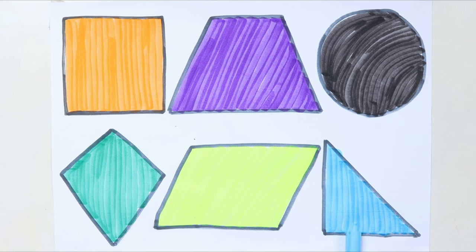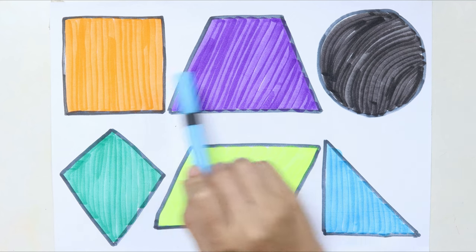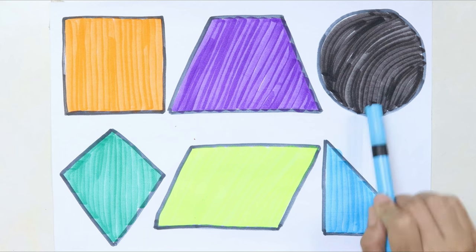Right triangle. Square. Trapeze. Circle. Kite. Parallelogram. Right triangle.